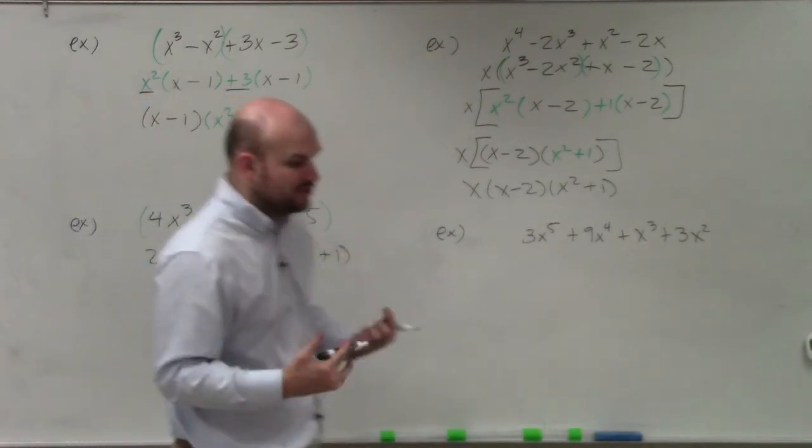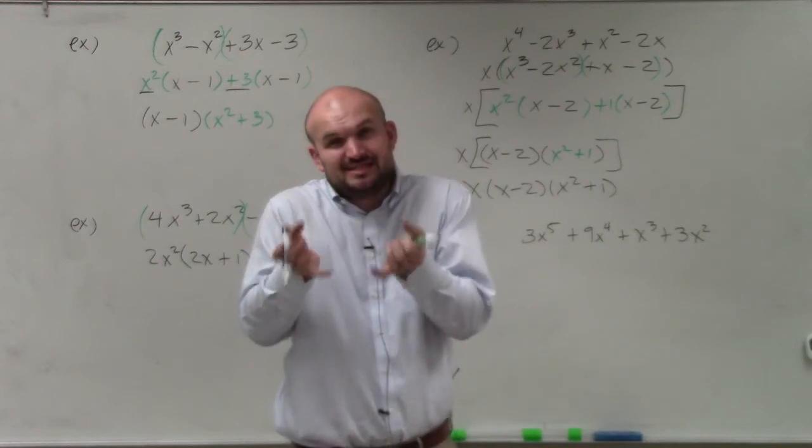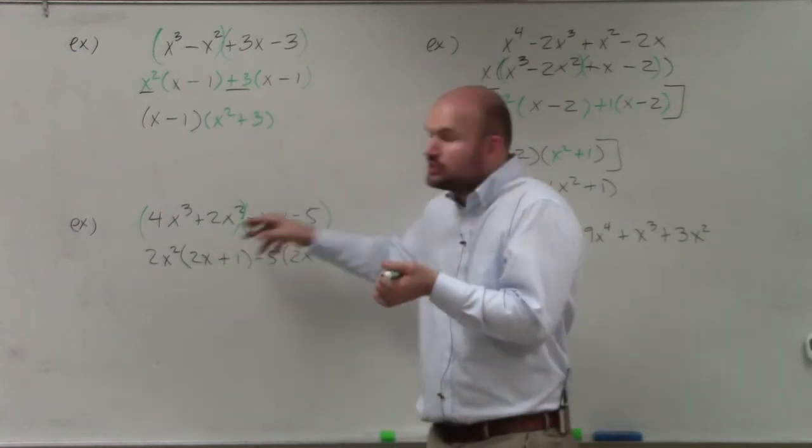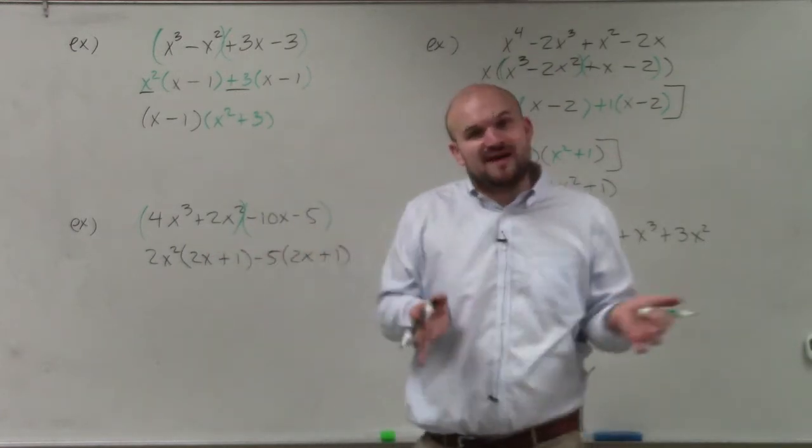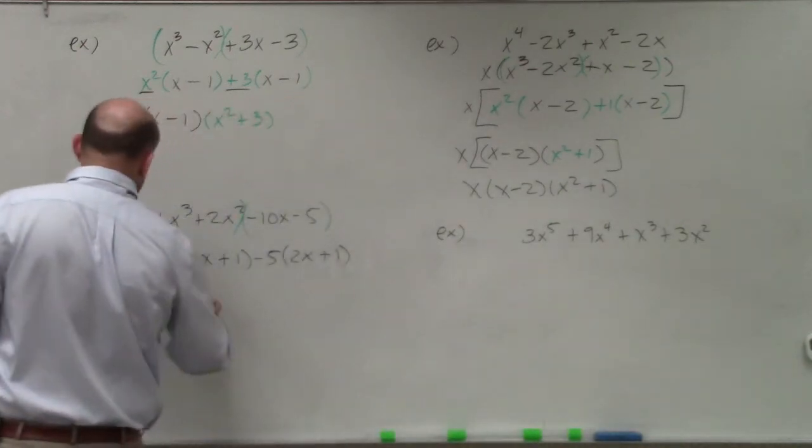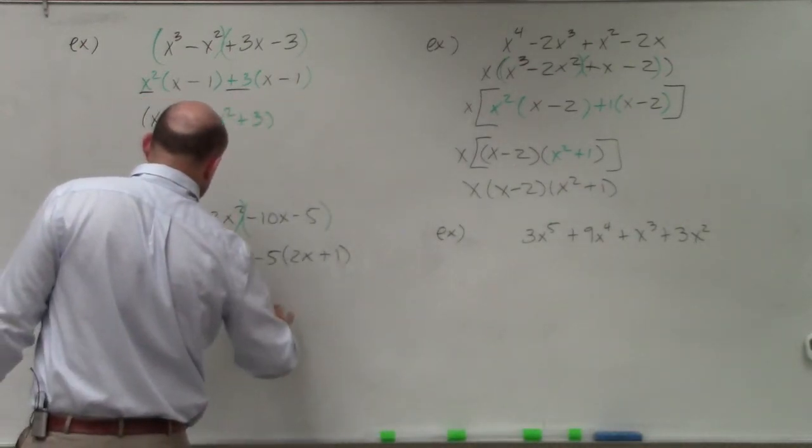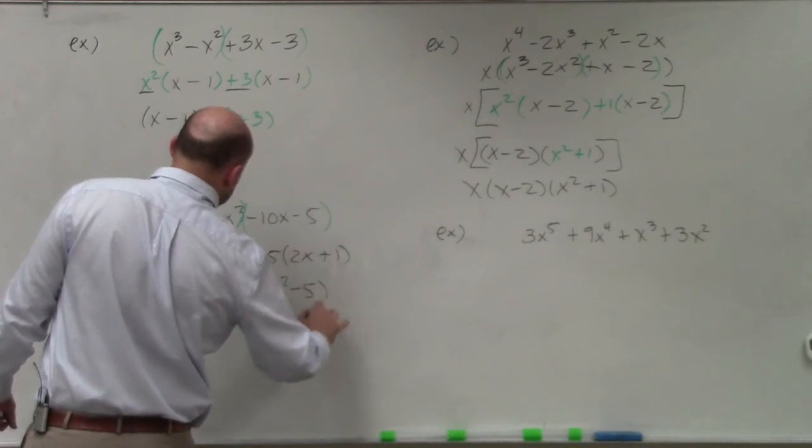And again, the goal of factoring by grouping is to factor out the GCF. So therefore, you have the same term in the parentheses again so you can factor it out one more time. By doing that, I get 2x plus 1 times 2x² minus 5.